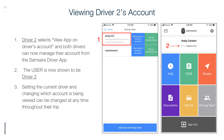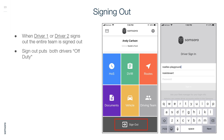Viewing Driver 2's account and changing driver assignment: Both drivers can now manage their account from the Samsara Driver App. The user is now shown to be Driver 2. Setting the current driver and changing which account is being viewed can be changed at any time throughout the trip. When Driver 1 or Driver 2 signs out, the entire team is signed out and both drivers are placed off duty.